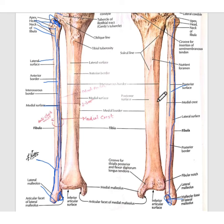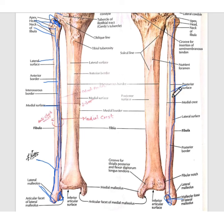Now its side determination. Its lower end is expanded only anteroposteriorly and is flattened from side to side. Laterally, it consists of the lateral malleolus, and medially it consists of a malleolar fossa. Its anterior surface consists of two borders, while its posterior surface consists of only one border. And above, it has the styloid process. From these features, you can easily recognize the fibula bone.